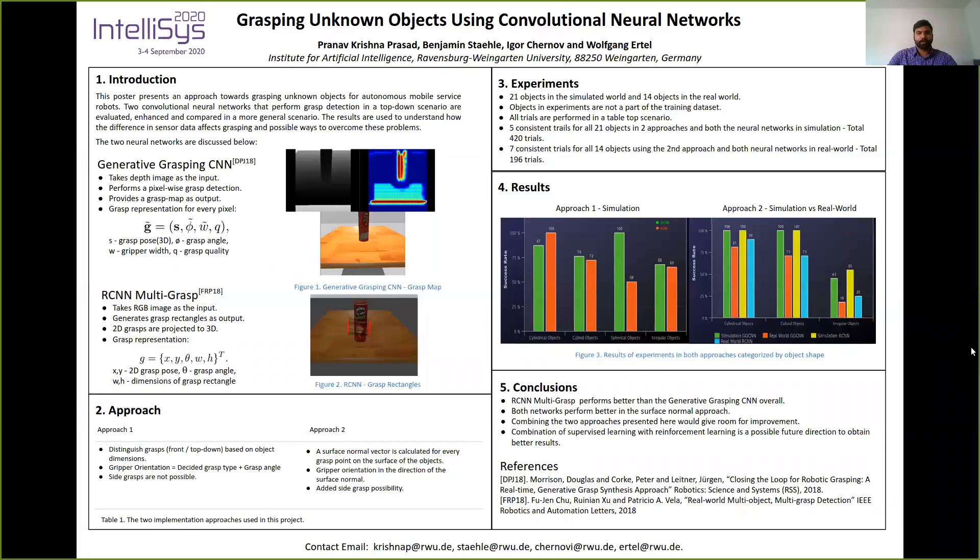I am going to present our poster paper on grasping unknown objects using convolutional neural networks. In this paper we have used two grasping neural networks and two implementation approaches to evaluate, compare and enhance these neural networks for grasping.